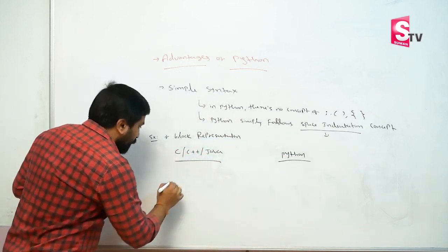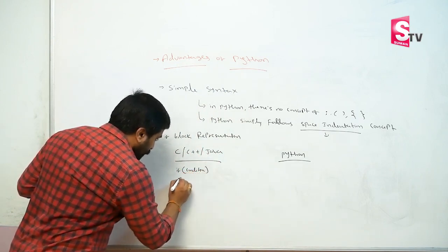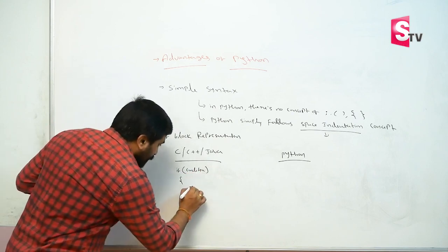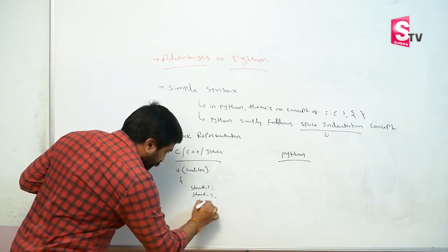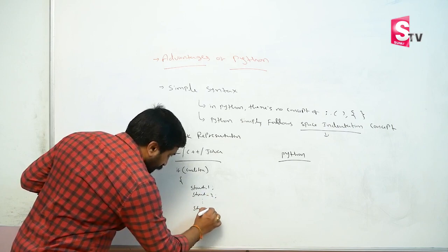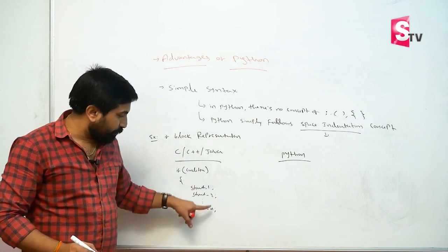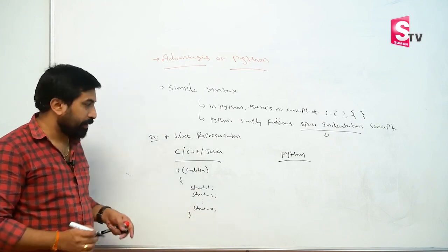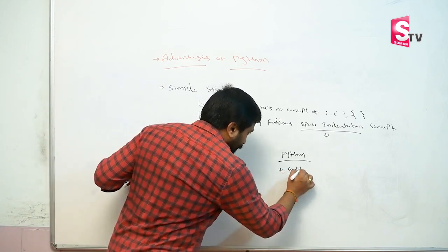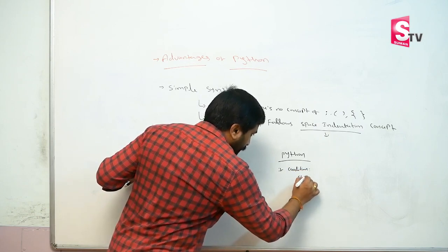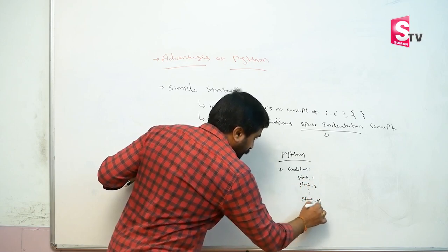In C++ and Java, the if statement has an open parenthesis, a conditional expression, then curly braces open, followed by statement 1, statement 2, and so on up to statement n. Each statement ends with a semicolon, and the block closes with a curly brace. In Python, it is simply: if condition, then statement1, statement2, up to statementn.